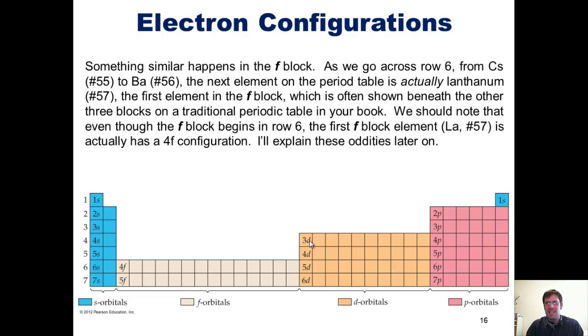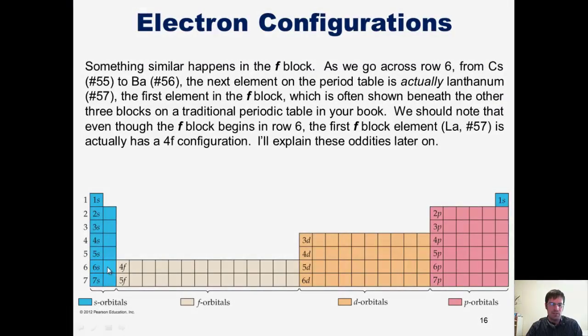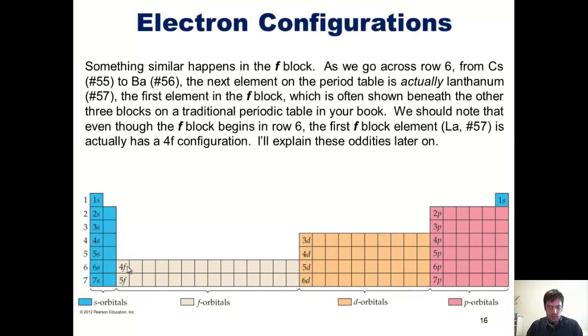Something similar happens in the f-block. As we go across row 6, from cesium, element 55, to barium, number 56, the next element on the periodic table is actually lanthanum, number 57, the first element in the f-block, which is often shown beneath the other three blocks on a traditional periodic table. We should note that even though the f-block begins on row 6, the first f-block element, lanthanum, number 57, actually has a 4f configuration. Now don't worry, I'll explain these oddities later on.